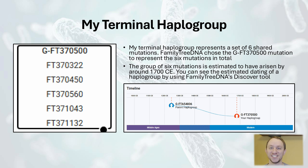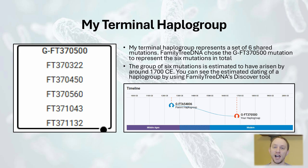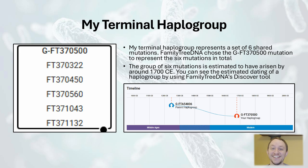My terminal haplogroup of GFT370500 is one of six shared mutations that represent my terminal haplogroup. Family Tree DNA chose one mutation, GFT370500, to represent the six mutations in total when listing the terminal haplogroup. Once you locate your terminal haplogroup on the Block Tree, you will want to assign a date to it. This date corresponds to the time when you first share a common paternal line ancestor with your other DNA matches who share your terminal haplogroup. Unfortunately, this information is not currently found in the Block Tree itself. Instead, head over to Family Tree DNA's Discover Tool, where you can see that my terminal haplogroup GFT370500 has been assigned a date of 1700 CE.